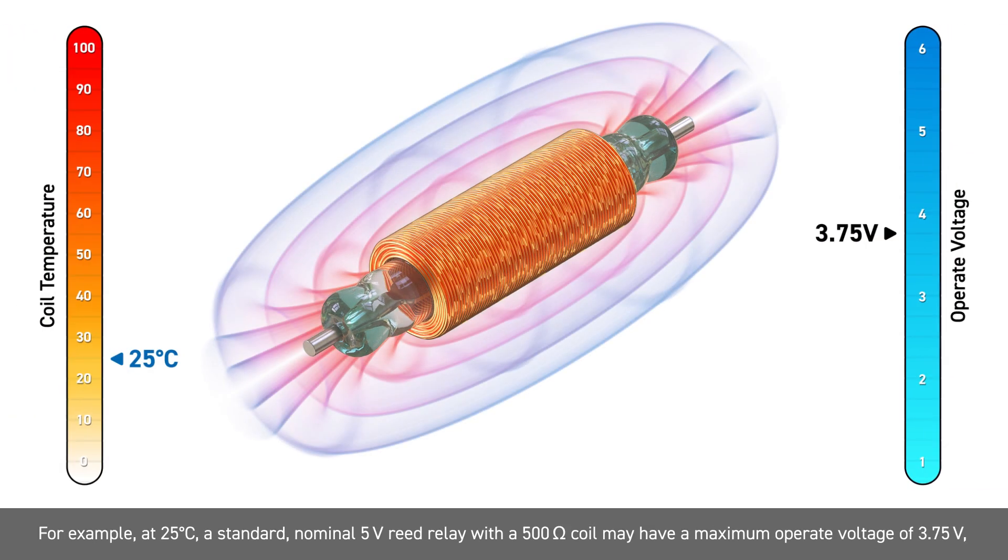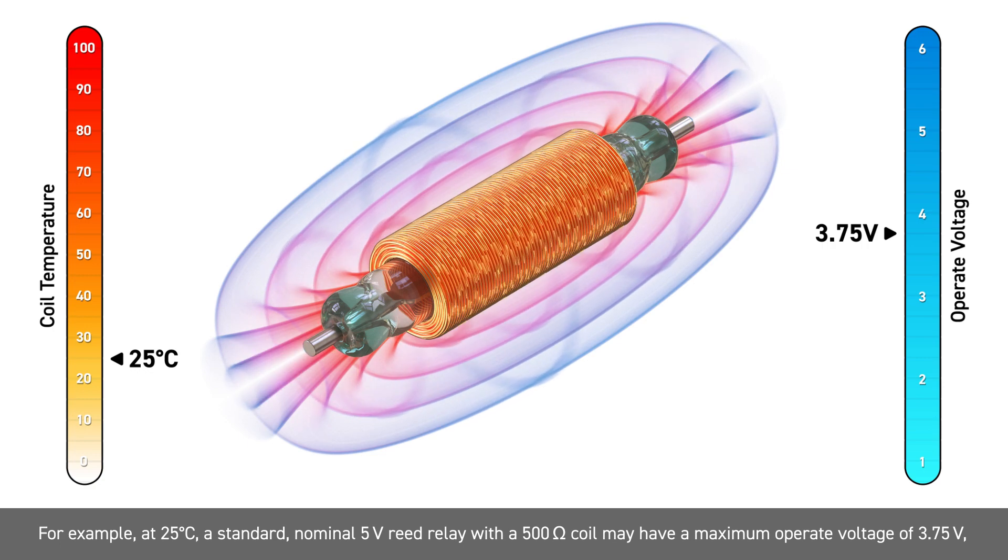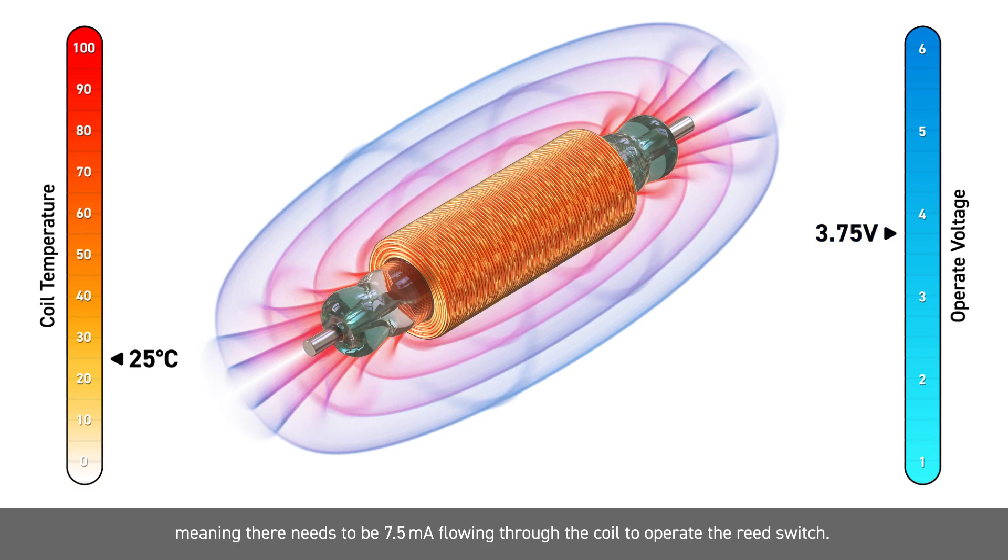For example, at 25 degrees Celsius, a standard nominal 5 volt reed relay with a 500 ohm coil may have a maximum operating voltage of 3.75 volts, meaning there needs to be 7.5 milliamps flowing through the coil to operate the reed switch.